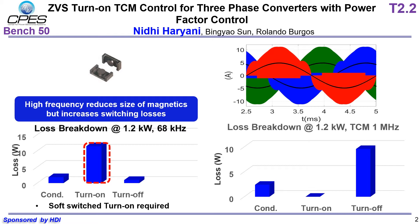The top right picture shows the phase currents for TCM. We can see that the current is bidirectional, just like in CRM in single-phase converters. CRM is pretty common in single-phase converters to achieve ZVS turn-on. I am proposing a CRM for three-phase converters. The benefit is that even at high switching frequency, a TCM at 1 MHz can achieve almost close to 99% efficiency with much higher power density.